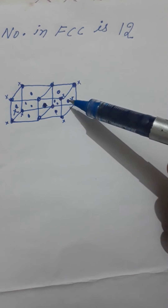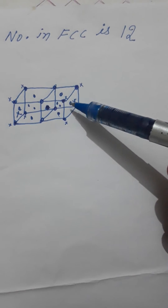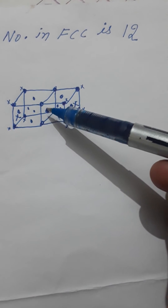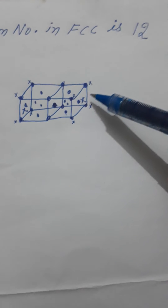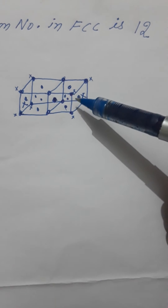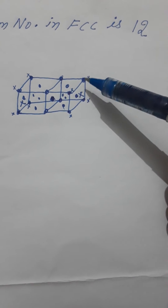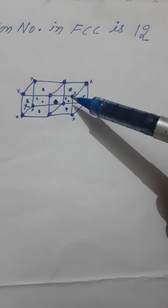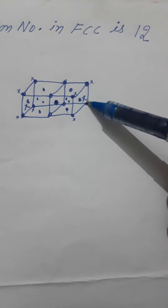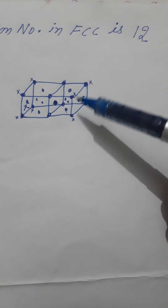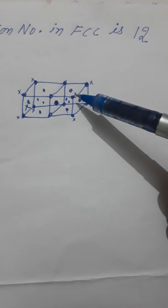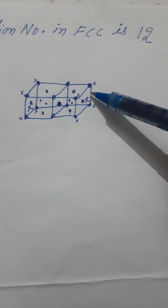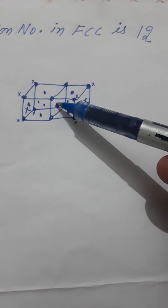The particle situated at the opposite face is not in contact with this face particle. The particles marked by the cross — one, two, three, four at the corners of the opposite face, and one in the middle of the opposite face — these five particles are not in contact with this particle.